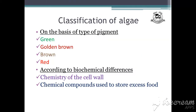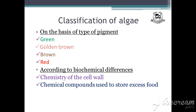Next is the classification of algae. Algae are classified on the basis of type of pigment and according to biochemical differences. On the basis of type of pigment, they may be green, golden, brown, or red. All algae contain green chlorophyll, but other pigments may be present in large quantities that can mask the colour of the chlorophyll — that is why they have different colours.